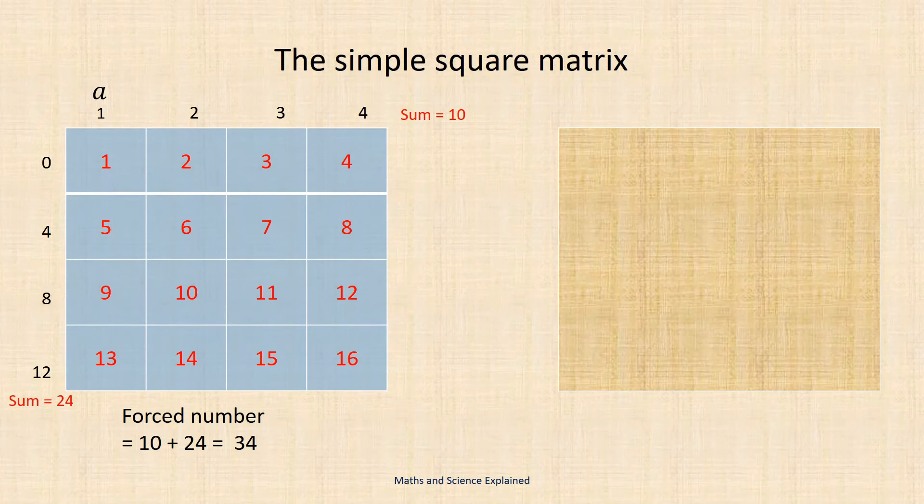One of the simplest ways to form an addition table on a square array is to write 1 in the first cell and then continue from left to right in serial order. A 4x4 matrix becomes an addition table for the two sets of numbers 1, 2, 3, 4 and 0, 4, 8, 12. This matrix will force the number 34.